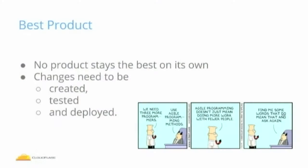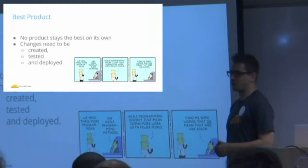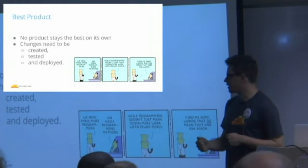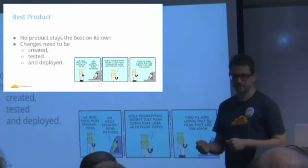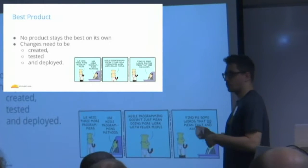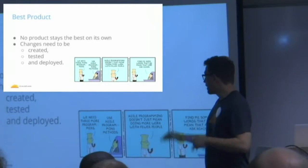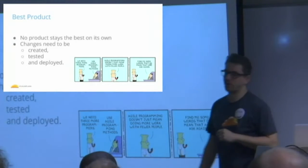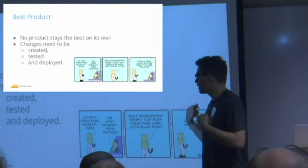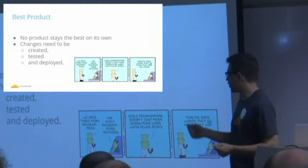So how do you get best product? We have to stay ahead of the competition. The biggest one is called Akamai. The first problem we have is no product stays the best on its own. You have to constantly keep evolving. One of the ways of evolving is you need to create something, test it, and deploy it. My talk will focus on the tested and deployed part. Because I personally feel that if you give great tooling when it comes to testing and deploying, the creation part becomes easier.